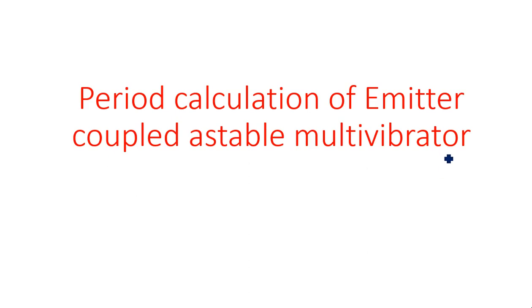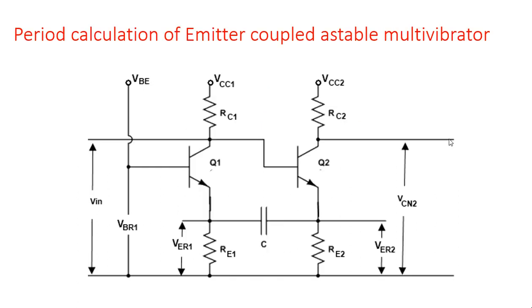In this video, I am going to explain the calculation of time period for the emitter coupled astable multivibrator. In the previous video, I explained the calculation of different voltages at different points of this circuit — the emitter coupled astable multivibrator — like V1, V2, VBN, VBN1, VBN2, VCN1, and VCN2. We have taken this as the ground, so R is nothing but N here.